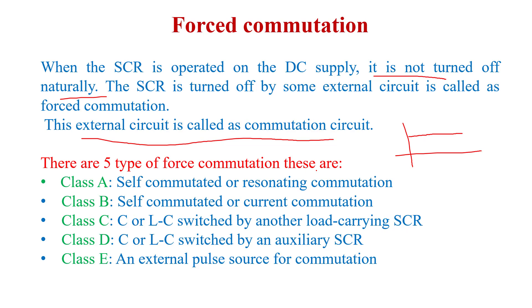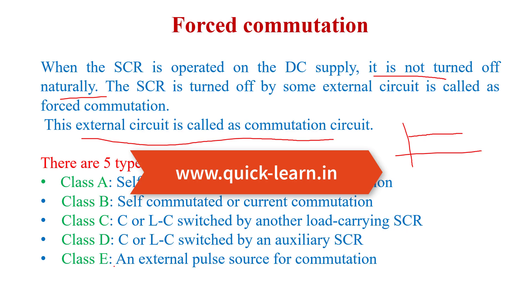There are five types of forced commutation: Class A, Class B, Class C, Class D, and Class E commutation. All commutation circuits will be discussed in coming videos one by one. Stay tuned, keep watching, keep sharing with your friends and juniors. For notes please visit my website www.quick-learn.in — the link is in the description box.